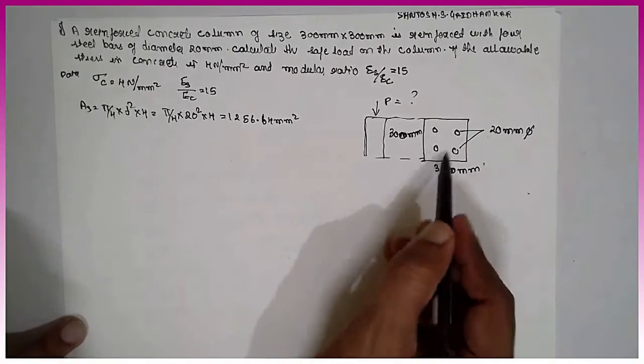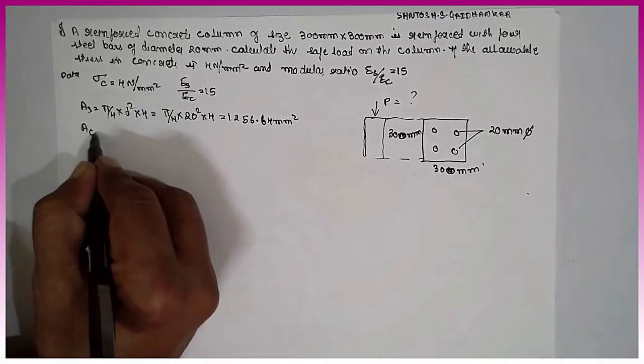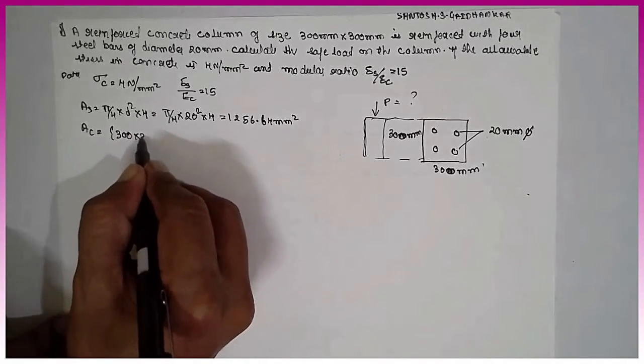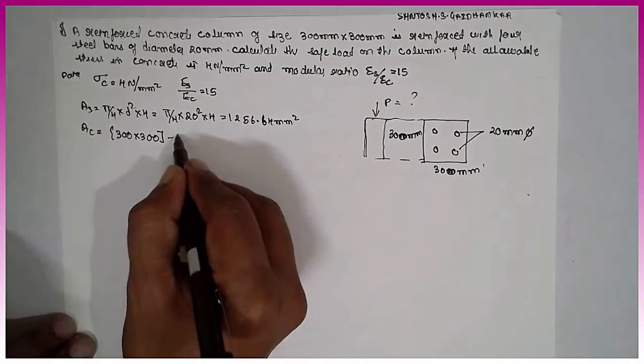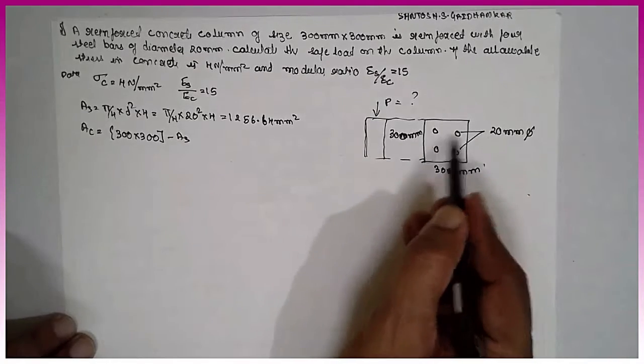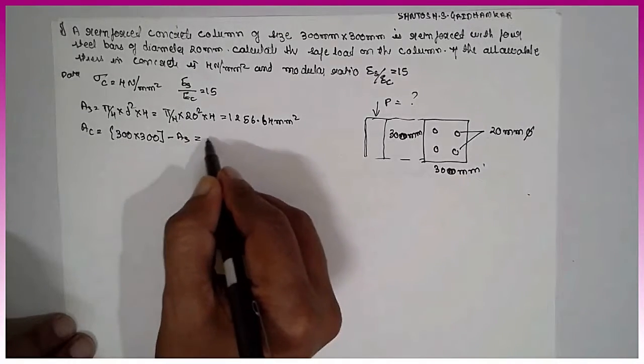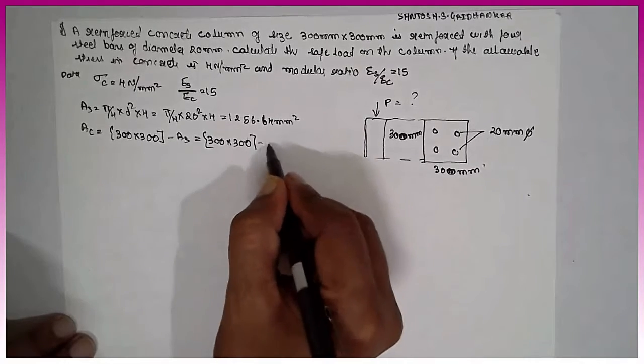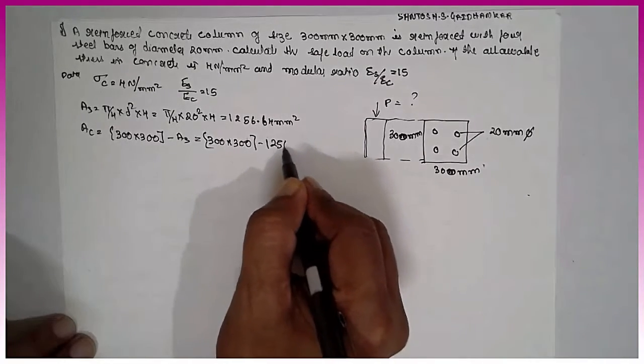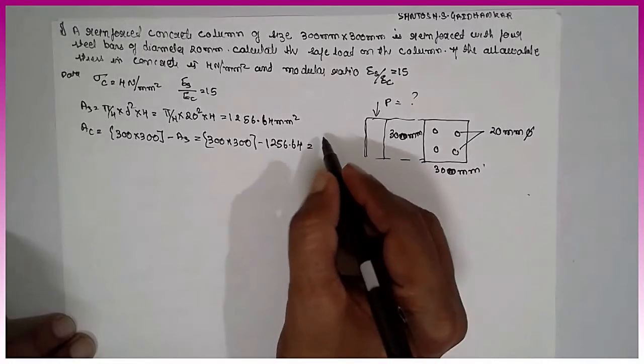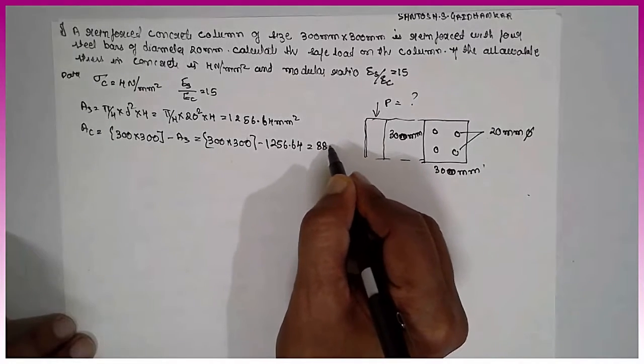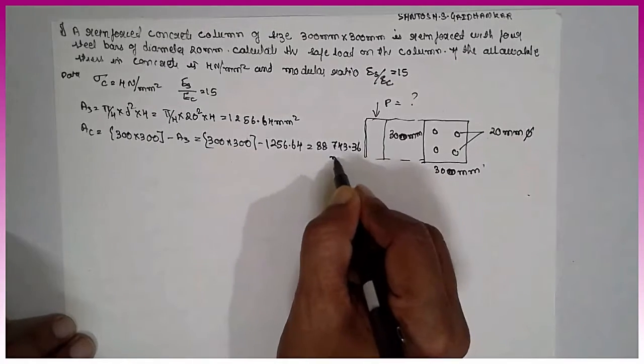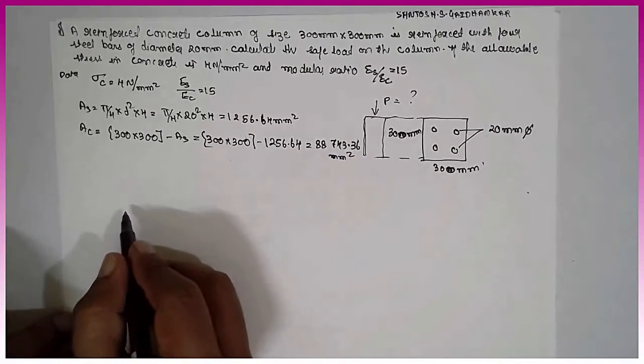Next, we are going to find out the area of the concrete. Ac is equal to 300 into 300 minus As. You have to deduct the steel area. That means 300 into 300 minus 1256.64. The answer is 88743.36 mm square.